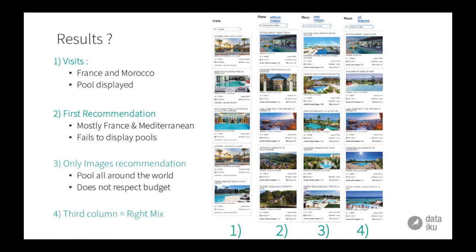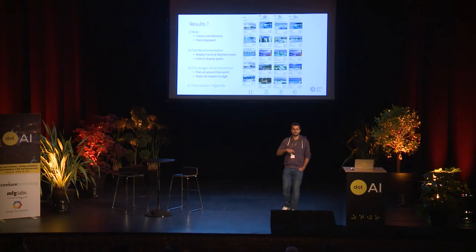These are the results we get. The first column is the visits from a user. The second one is the old recommendation engine without the image. The third one is a recommendation based only on the content of the image. The fourth is the mix of both. In the visit, the person came only to click on pool sales — so you probably want a nice hotel, mostly in France and Morocco. The second recommendation is good, however the images often don't have pools, so it's good low-quality in Morocco but not a hotel with a pool. The third one looks nice, but I'm sending the person to Cayman Island or Thailand, which is probably not in the budget. So we solved this issue by combining both models.